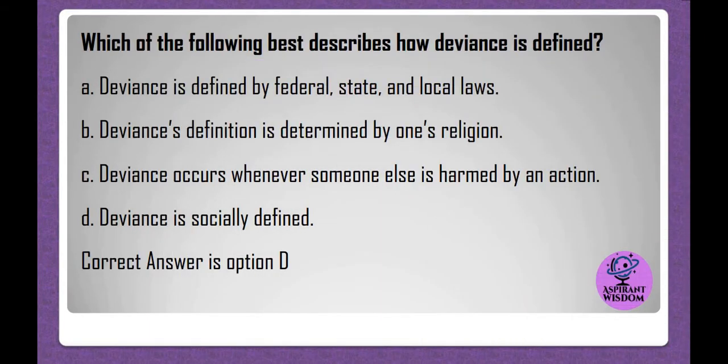Which of the following best describes how deviance is defined? A. Deviance is defined by federal, state, and local laws. B. Deviance's definition is determined by one's religion. C. Deviance occurs whenever someone else is harmed by an action. D. Deviance is socially defined. Correct answer is option D.